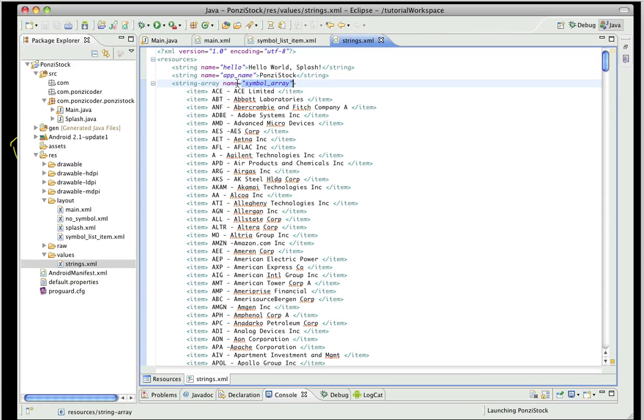I have a text file that contains all of this - all the 500 company names - and you can just copy and paste it. The link is on the YouTube video. You just download that file and you can copy and paste it into the strings.xml file.